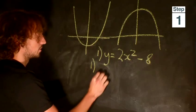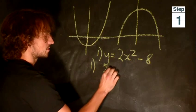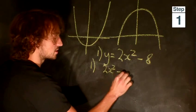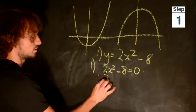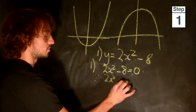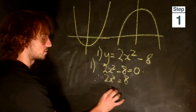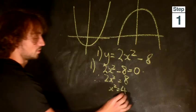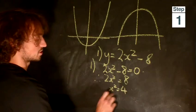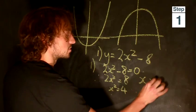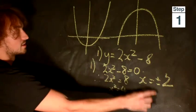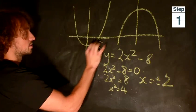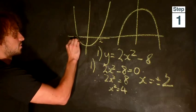So we set y equal to 0. So 2x squared minus 8 equals 0. Therefore, 2x squared equals 8 and x squared equals 4. From that, we can deduce that x is equal to plus or minus 2. That means this point here is 2 and this point here is minus 2.